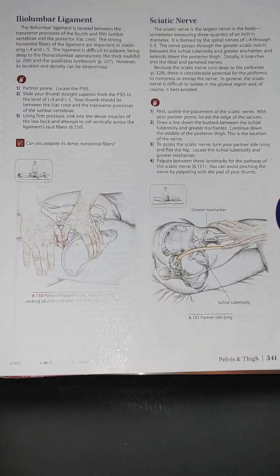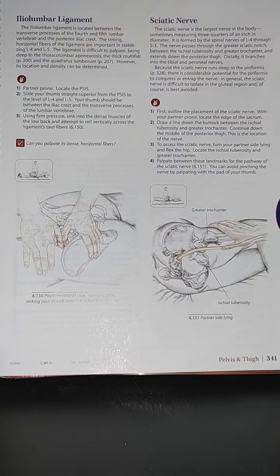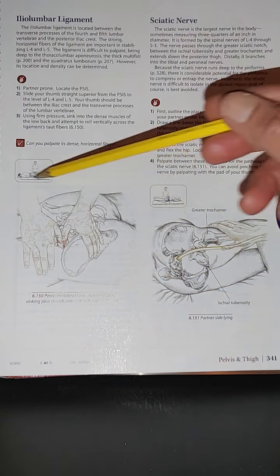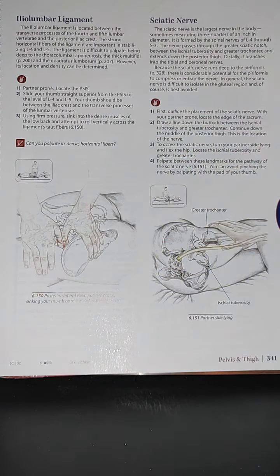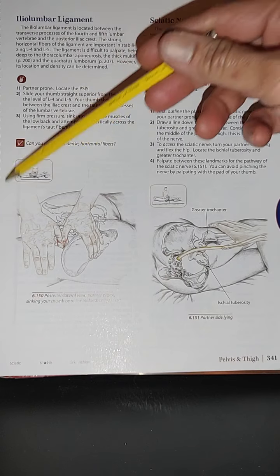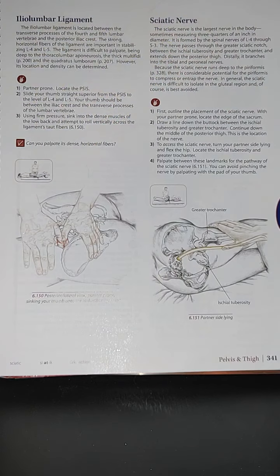The iliolumbar ligament is located between the transverse process of the fourth and fifth lumbar vertebrae and the posterior iliac crest. Looking at image 6.150, you can see a smaller image here where the client is sinking their thumb onto the iliolumbar ligament.